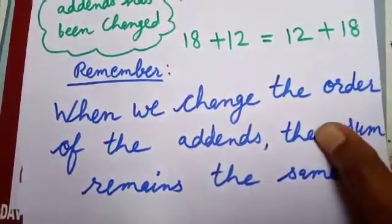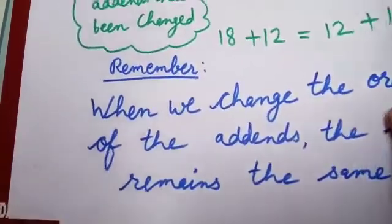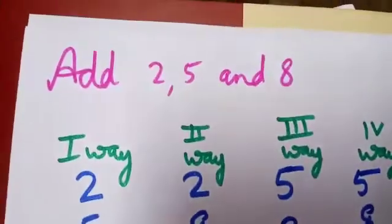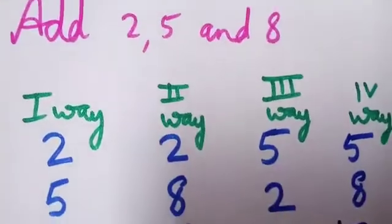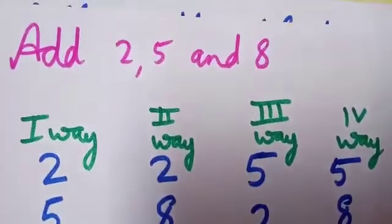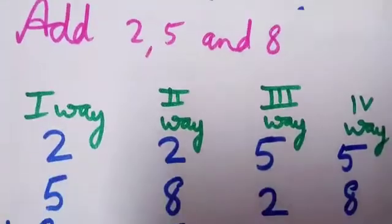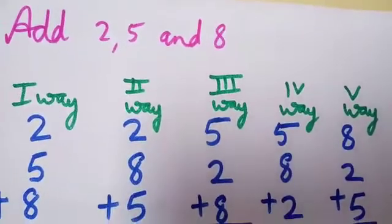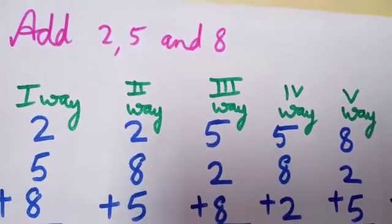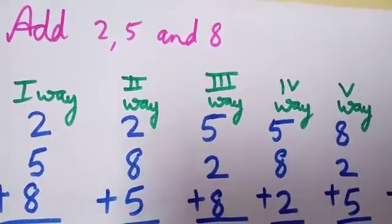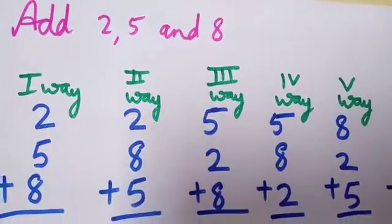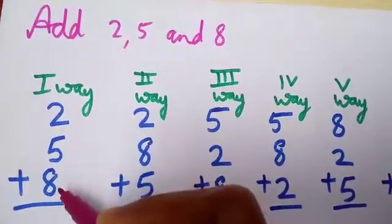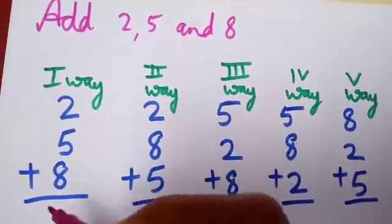Let us take three numbers. Add 2, 5, and 8. There are six ways to add these three numbers. First way: 2 plus 5 is 7, and 7 plus 8 is 15.